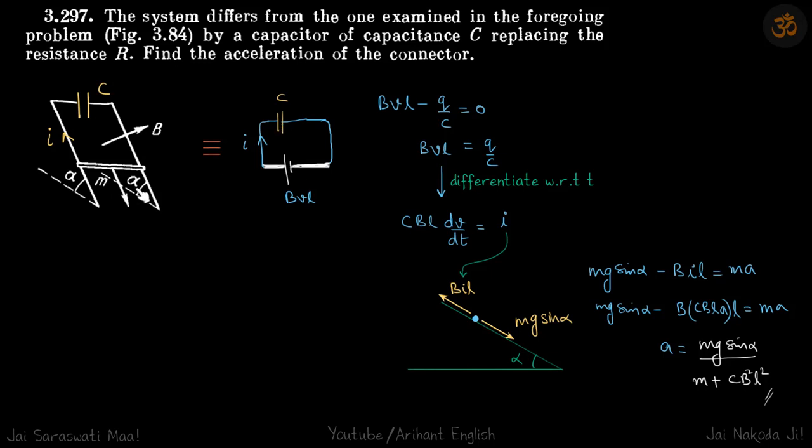So this is the equivalent circuit. So because the rod is moving down with velocity V, the EMF, motional EMF is BVL.